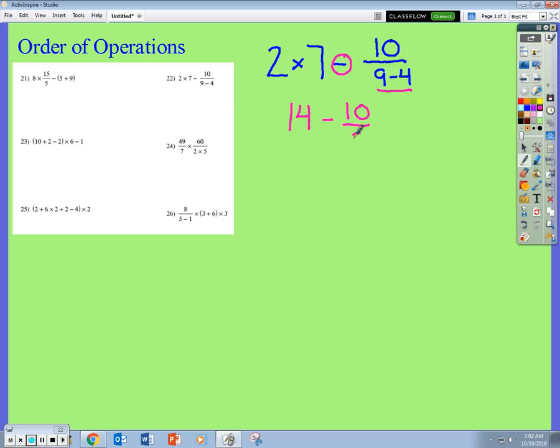So now I have 10 divided by 5. And again, now we have subtraction and division left. We're taught that according to PEMDAS, we would divide first. So now we have 14 minus 10 divided by 5 is 2. And then 14 minus 2 gives me 12.